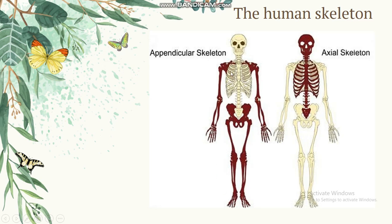The shoulder girdle holds the upper limbs to the body, while the pelvic girdle holds the lower limbs to the body. Do you understand? Thank you.